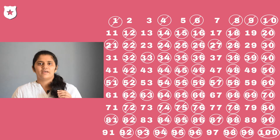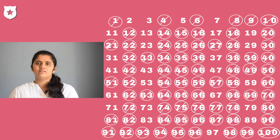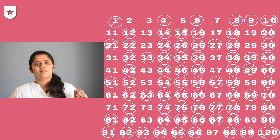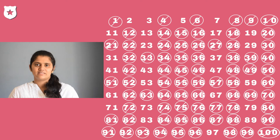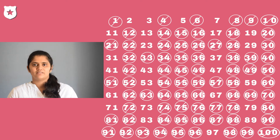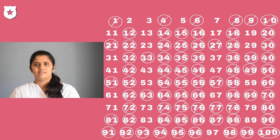6 is already struck out since it's a multiple of 2. 7 is the next prime number, so we are striking out all the multiples of 7 since those numbers are composite numbers. Let's see the table now. There are some numbers remaining. If you look into those numbers, we can see that those numbers are having only 2 factors — 1 and the number itself. So all those numbers are prime numbers. So there are 25 prime numbers between 1 and 100.